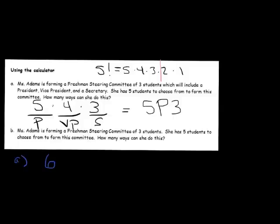Let me give you another example. If you had to do 6P2, that just means 6 times 5 — start the factorial but stop after two spots.